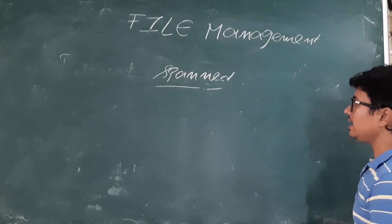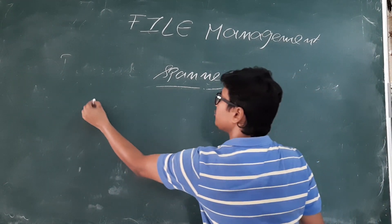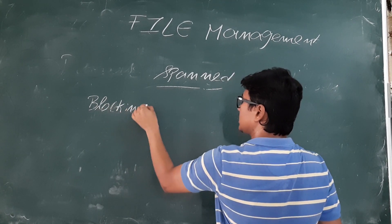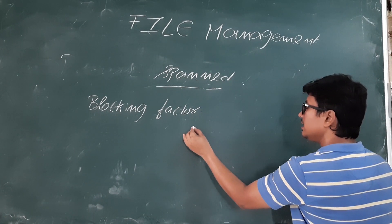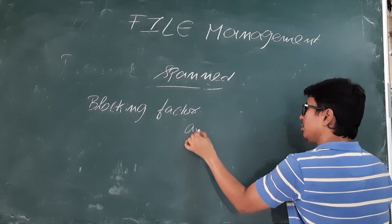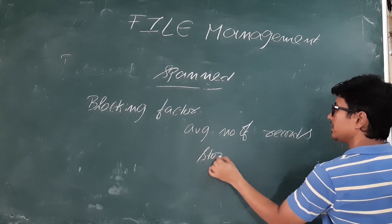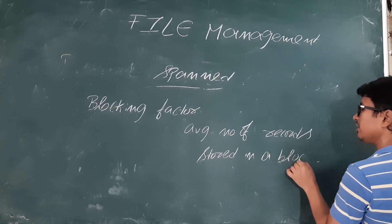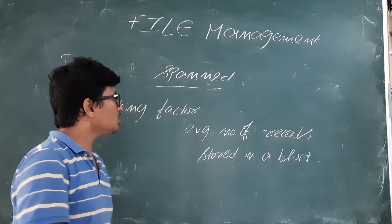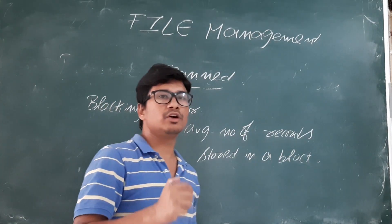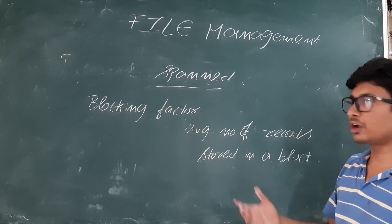Before discussing the spanned strategy, let me discuss what is a blocking factor. Blocking factor will tell us the average number of records stored in a block. A block is a collection of records, and the blocking factor tells me the average number of records I can keep in a block.